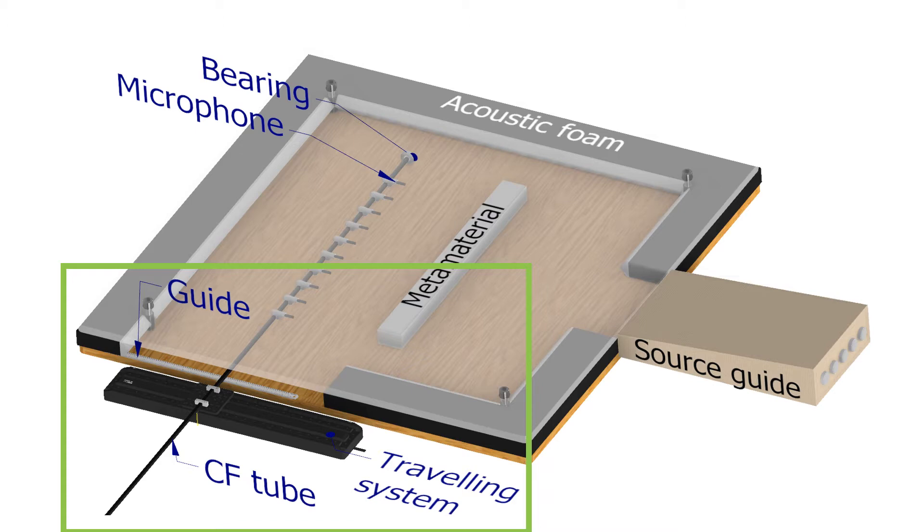A carbon fiber tube was secured on a traveling system with the other end supported by a ball bearing. The traveling system could not be automatically automated at the time of the experiment so we had to move the stage manually. A meter rule was sandwiched between the plywood and foam to act as a guide as we translate the system by increments of 10 millimeters.